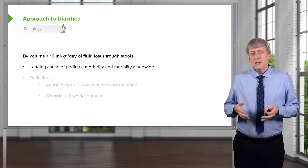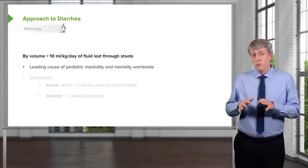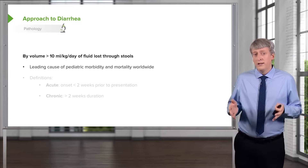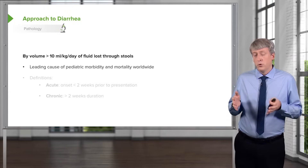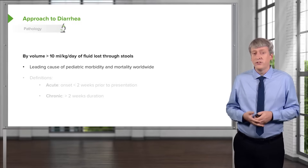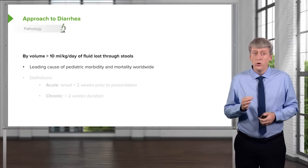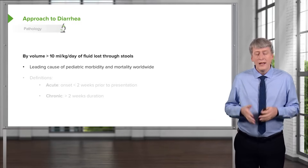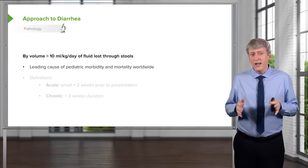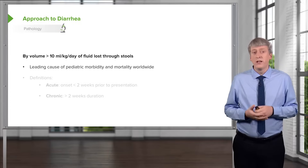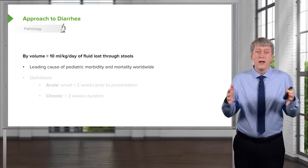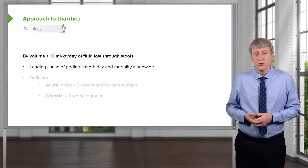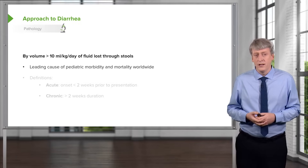The leading cause of death worldwide in terms of morbidity and mortality in children is infectious diarrhea. Rotavirus is a killer in the developing world. In the United States, it's much less common because we have a medical system where children can come and get help if they're feeling dehydrated.